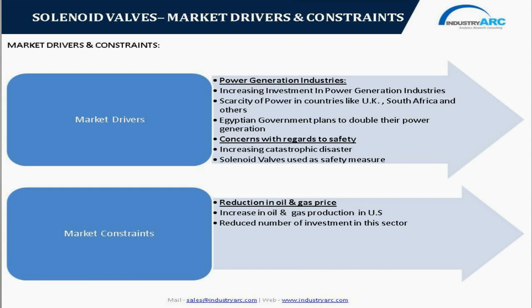Increasing investment in expanding power generation capacity is driving sales of valves, actuators, and positioners. Governments of various countries such as the UK, South Africa, and others are taking initiatives to increase the capacity of existing power plants and have sanctioned projects to construct new ones. The Egyptian government plans to double its power generation capacity by 2020, building new facilities including a nuclear power plant with Russian technology, and a new solar power plant in Siwa generating 10 megawatts. The Egyptian Electricity Holding Company has signed a contract with ACWA Power to build 2 gigawatt renewable energy projects, driving the solenoid valves market.